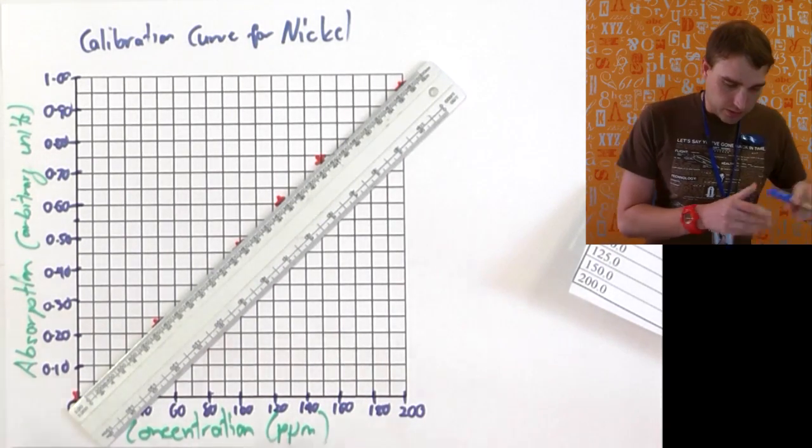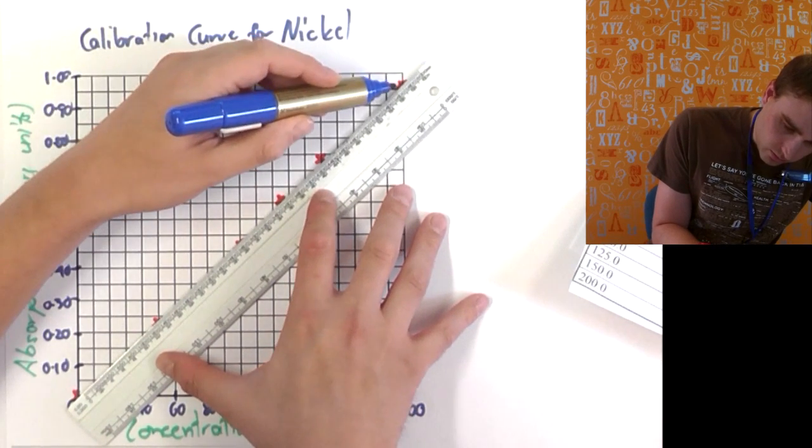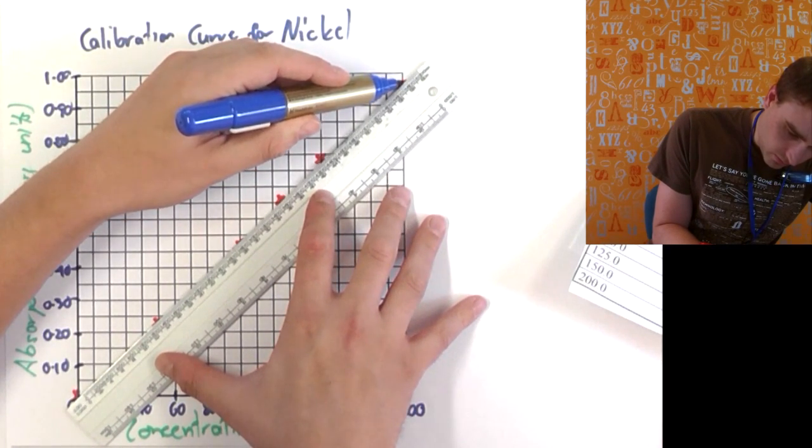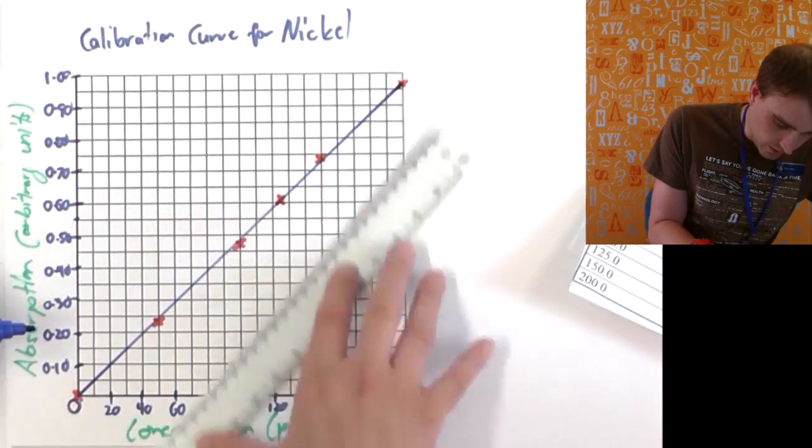So I'll put my line here, and about, that's it. I'll draw it, then we'll see whether it's a good enough calibration curve line.